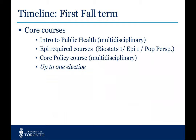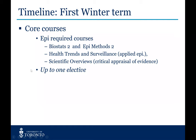The core courses in your first fall term consist of an intro to public health course — which is multidisciplinary, taken by all incoming MPH students from all divisions at the school — followed by a series of required courses: biostatistics one, epidemiology methods one, population perspectives, and a core policy course also taken by students in other disciplines, plus up to one elective. In the second term, you move to more advanced biostatistics and epi methods courses, take an applied epi course in health trends and surveillance, a course on critical appraisal of evidence through scientific overviews, and again one elective.